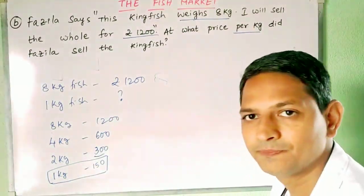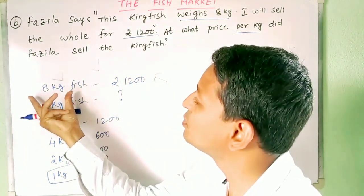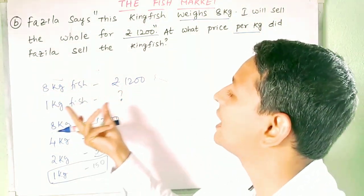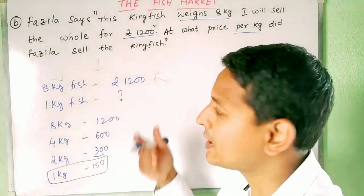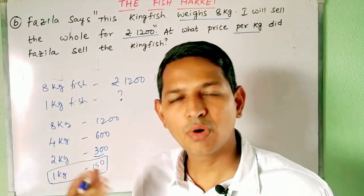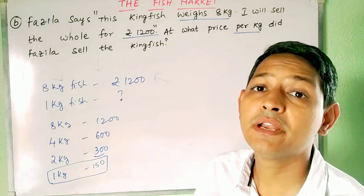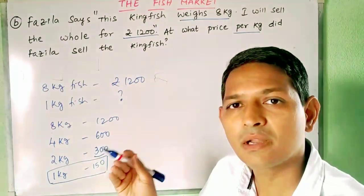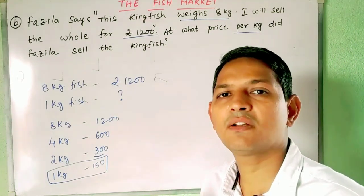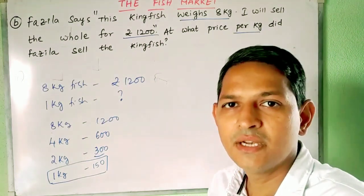Another method: more quantity is given, and the price of less quantity is asked. We are doing repeated subtraction, and the shortcut for repeated subtraction is division. So simply divide 1200 by 8 to get the answer.